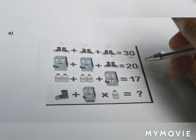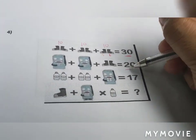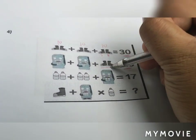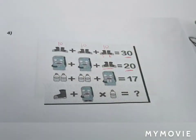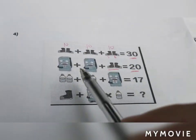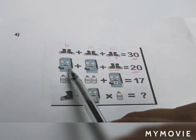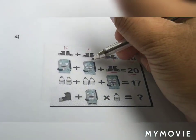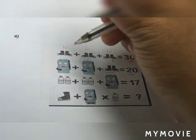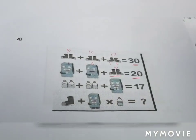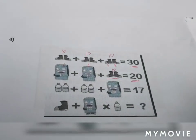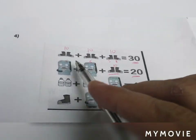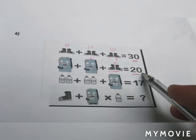In the second equation, we need to get 20. This figure is 10, and the single shoe is equivalent to five. So 10 plus 5 plus 5 is equal to 20.